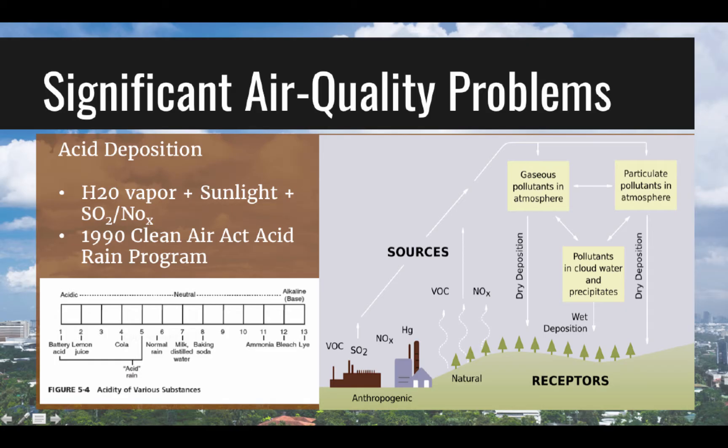Acid deposition is created when sulfur dioxide or nitrogen oxides react with sunlight and water vapor to form acids, which fall to the earth as deposition. Wet deposition may be snow or rain, and dry deposition may be in the form of dust or gases. Acid rain usually has a pH below 5 and affects the eastern U.S. in particular due to higher levels of industrial combustion. The amount of deposition and sensitivity of the recipient land determine the damage caused. Areas farther to the northeast with granite or glacial soils cannot buffer greater amounts of acid deposition. Acid deposition causes soil leaching, increased erosion, harm to aquatic ecosystems, building degradation, and public health issues.